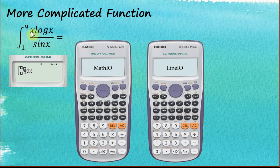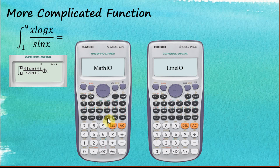The numerator is x·log(x), so enter shift-x, log, shift-x, then close brackets. Move to the denominator, which is sin(x), so enter sine, alpha-x, then close brackets. Move to the second container for the lower limit: one, and the upper limit: nine.